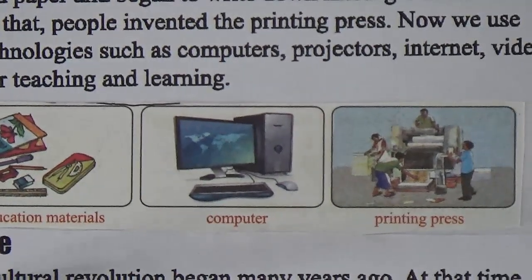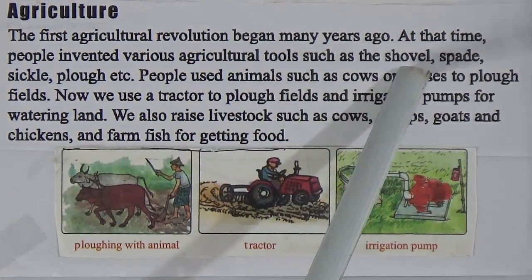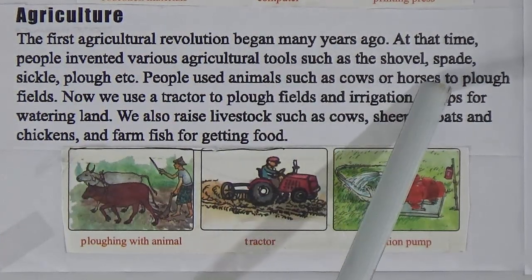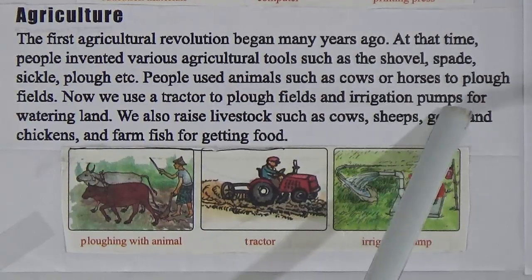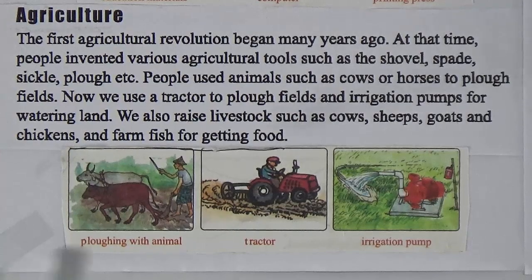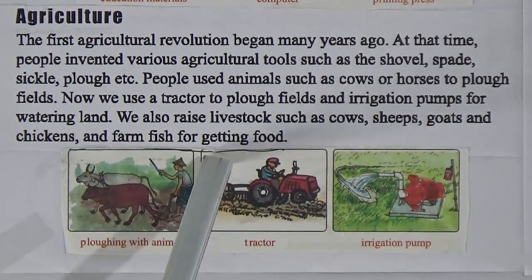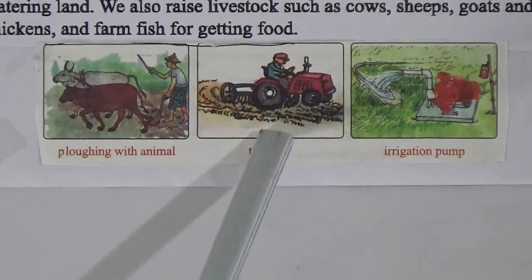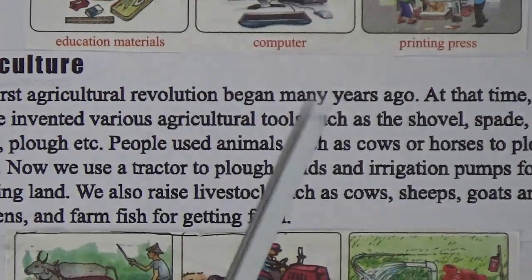Here are all educational materials — here is a computer, and here is a printing press. Now, agriculture: the first agricultural revolution began many years ago. At that time, people invented various agricultural tools such as the shovel, spade, sickle, and plough. People used animals such as cows or horses to plough fields. Now we use a tractor to plough fields and irrigation pumps for watering land. We also raise livestock such as cows, sheep, goats, and chickens, and fish for getting food.